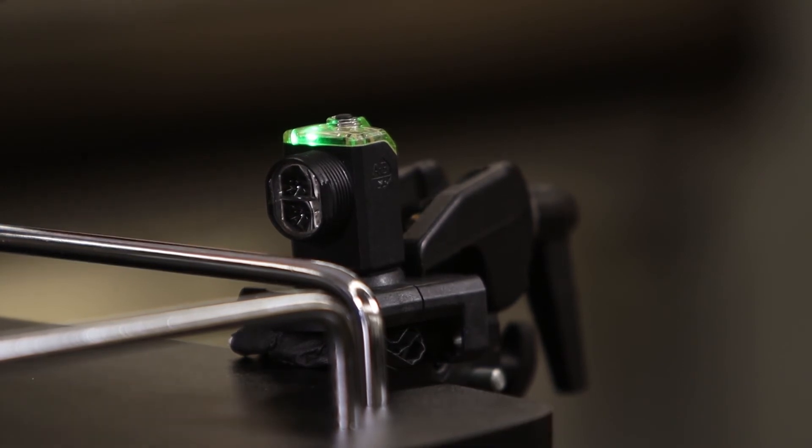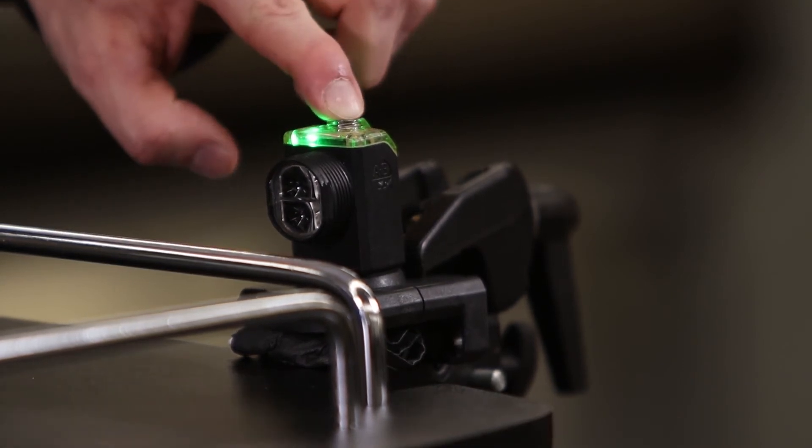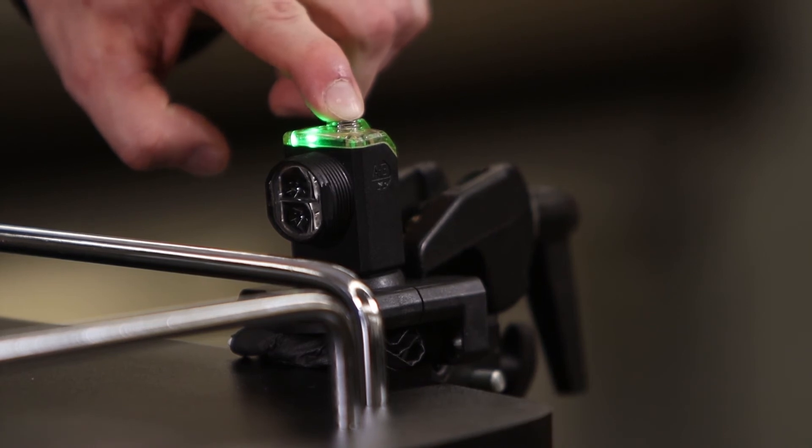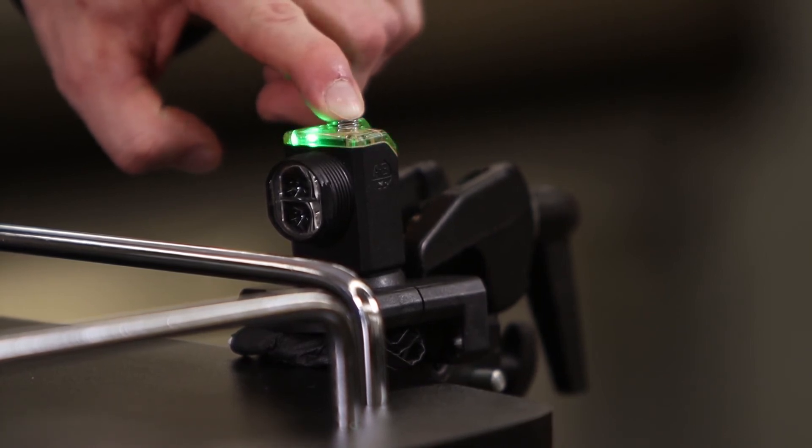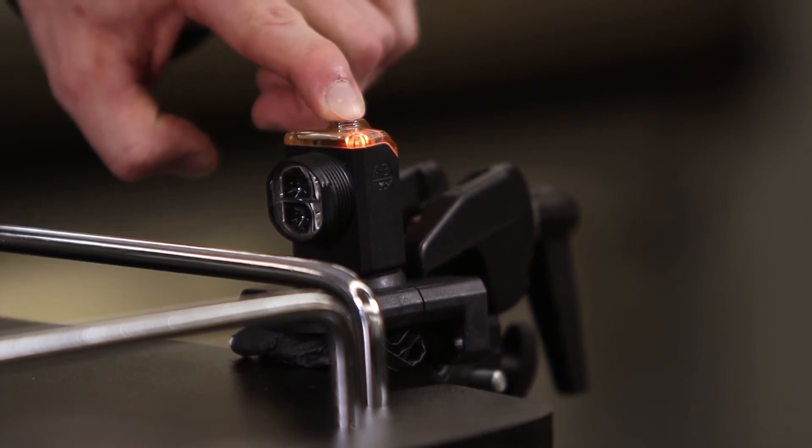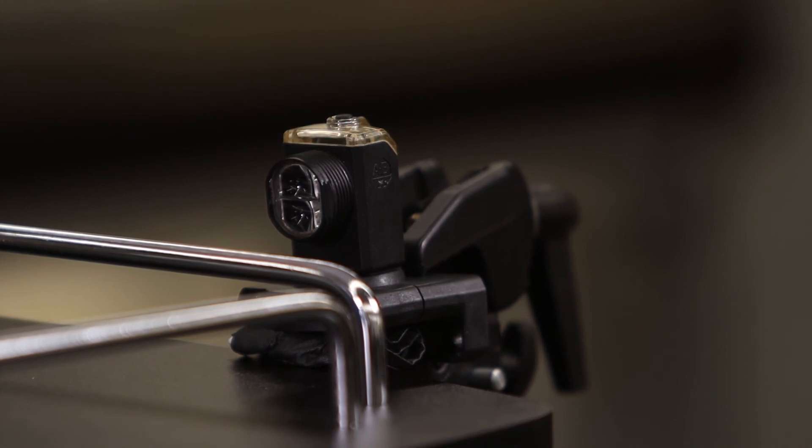To force the output type, press and hold the button for 12 seconds until the green and orange LEDs begin to flash together. Then release the button. You can now toggle from auto NPN to PNP by pressing and releasing the button to scroll through each option.